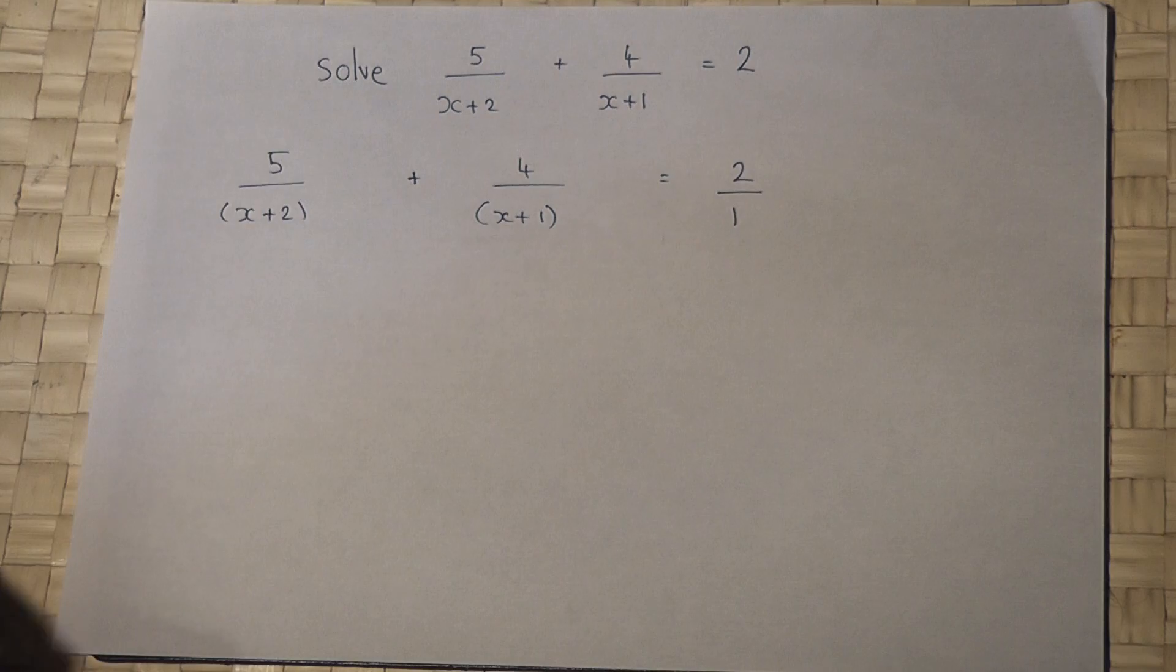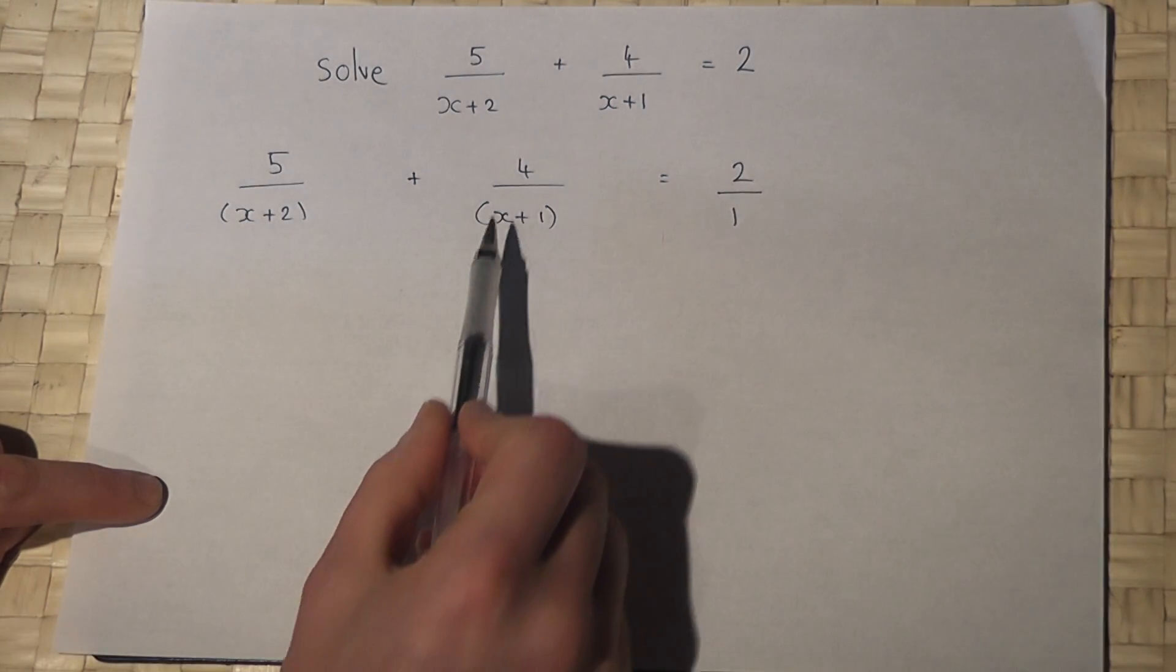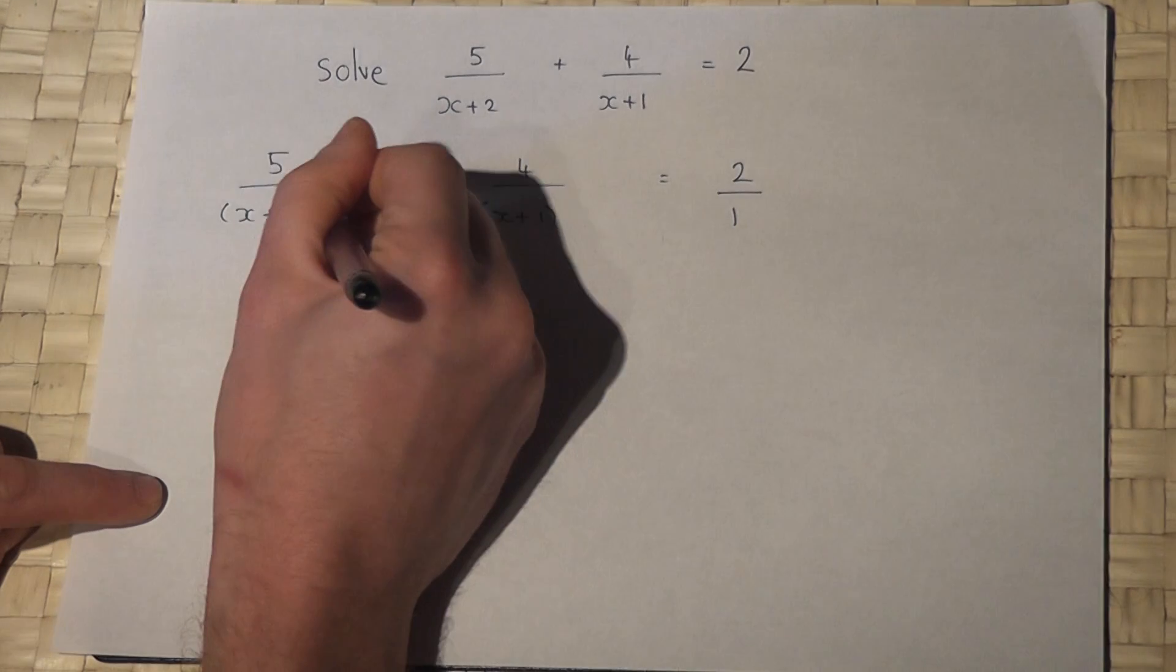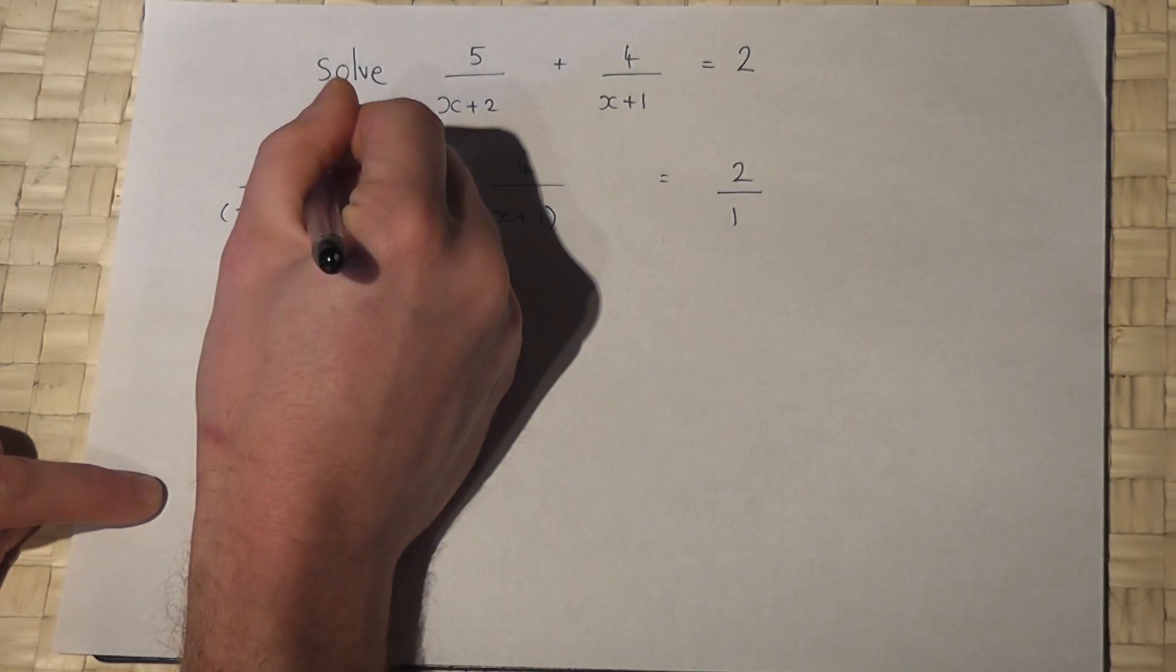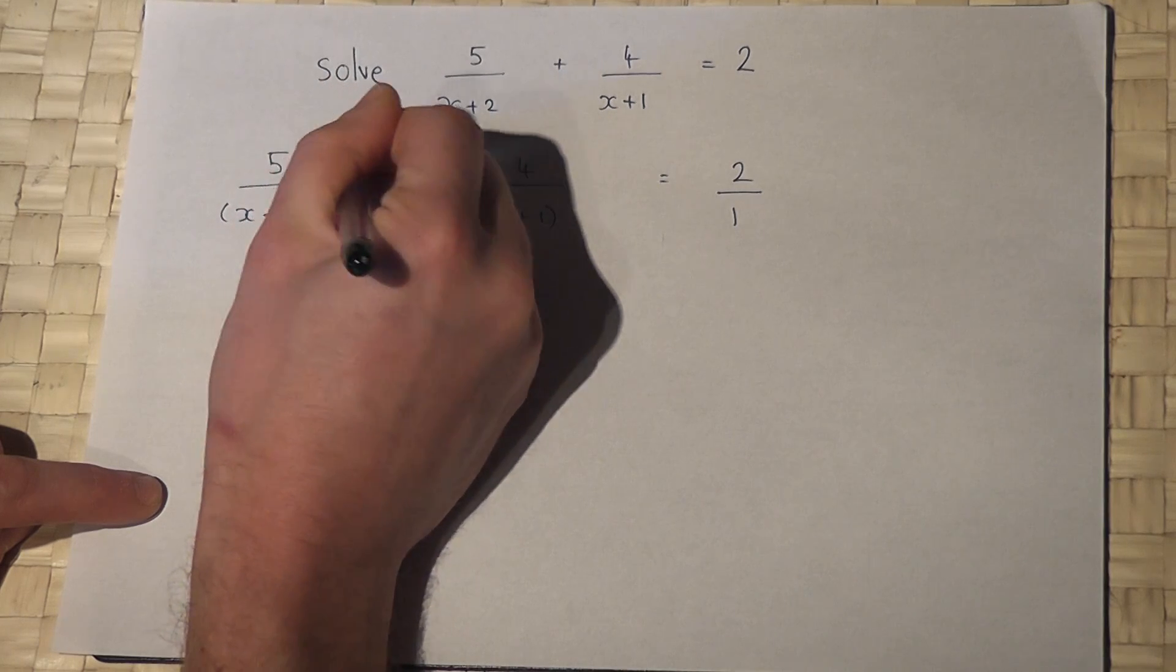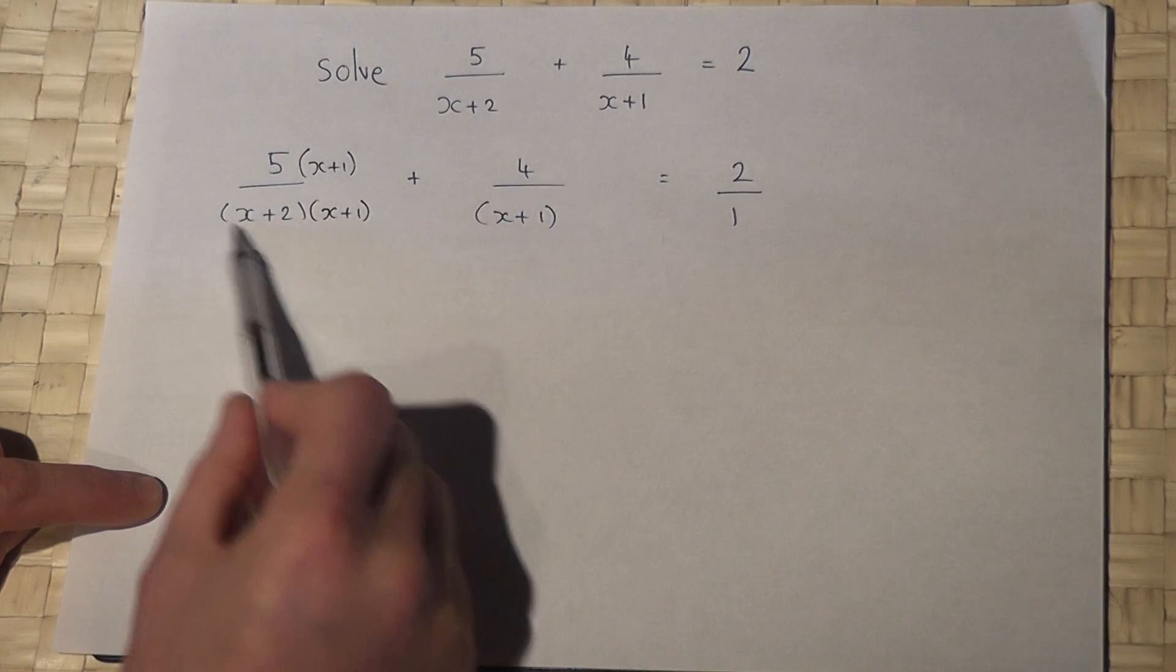Right then, now the method here is to get the bottoms of the fractions to be the same. Now this has got an x plus 1 there, so if I put an x plus 1 under this fraction, below and on top of the fraction, I've not actually changed the fraction. It's an equivalent fraction.